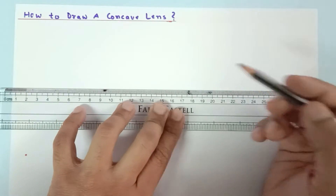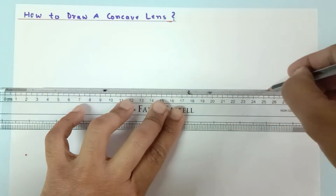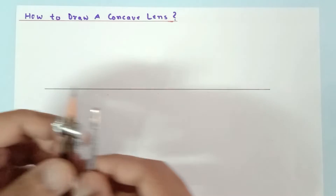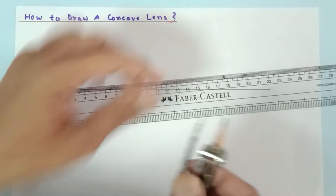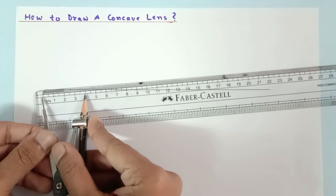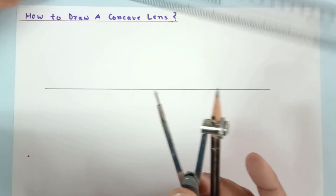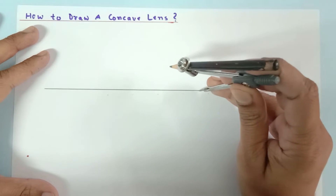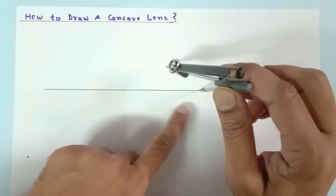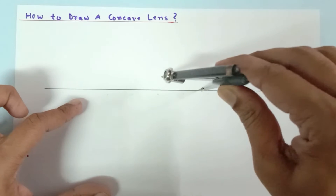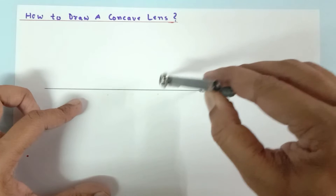First of all, take a pencil and draw a straight line. Now we are going to take any arbitrary value — like 5 centimeters — but let me take 4 centimeters. Place the tip of the needle of the compass here, and make sure you don't put it in the middle because the lens would be formed there. Keep the compass very rigidly so it doesn't move.